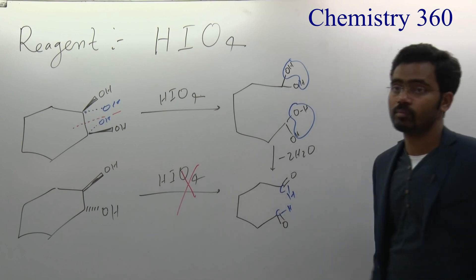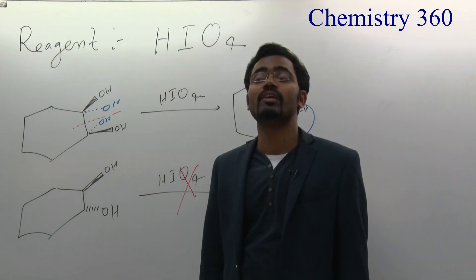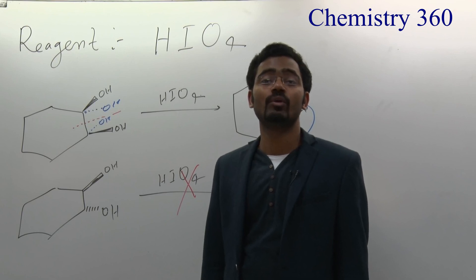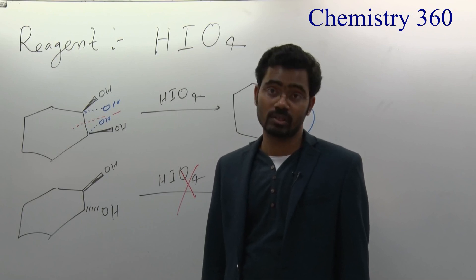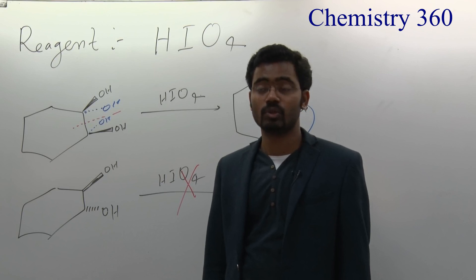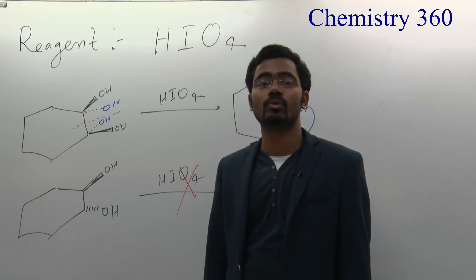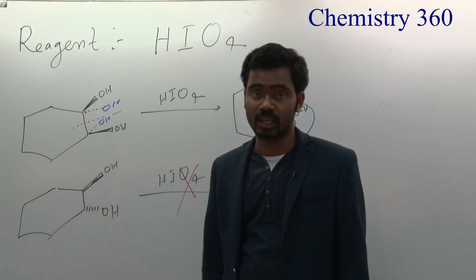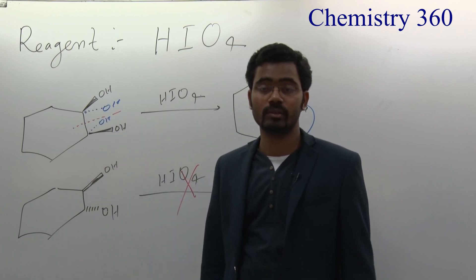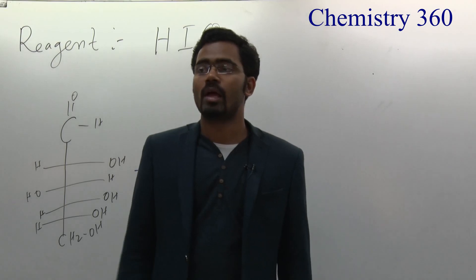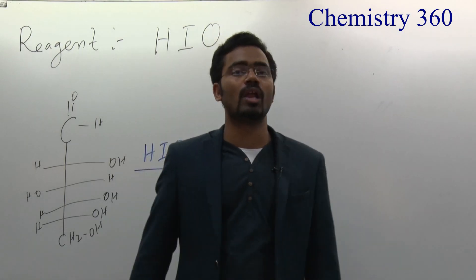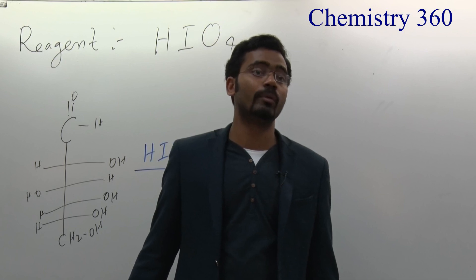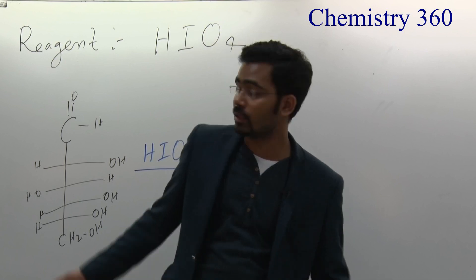So in a closed chain, rotation is restricted, but in an open chain rotation is not restricted. In an open chain, the OH groups can be either syn or anti and the reaction will occur either way. But in a closed chain, they must be syn. Now see another example: if any adjacent carbons all have oxygen substituents, you can break all those bonds and the products will form.